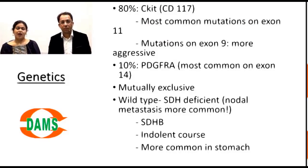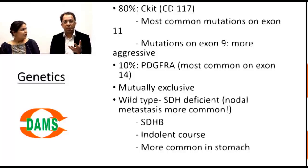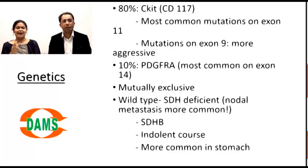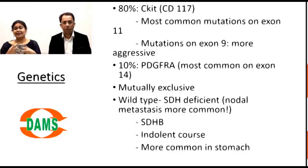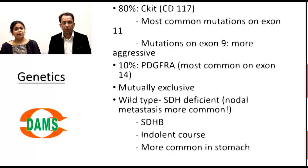Regarding genetics, approximately 80% of cases show activating mutations in the receptor tyrosine kinase c-kit, also called CD117. This directly explains the role of imatinib — a tyrosine kinase inhibitor — which suppresses the overactive c-kit, similar to its use in CML. The most common c-kit mutations are in exon 11, but more aggressive tumors carry exon 9 mutations. The remaining ~10% show PDGFRA mutations, and c-kit and PDGFRA mutations are mutually exclusive.